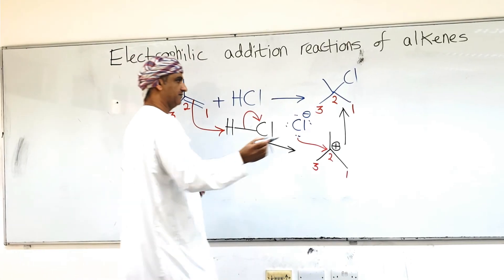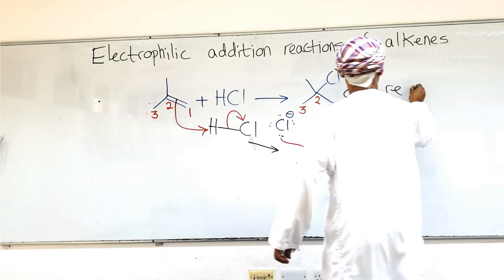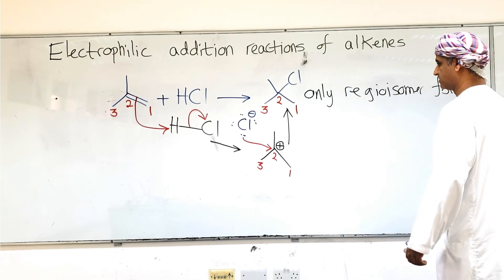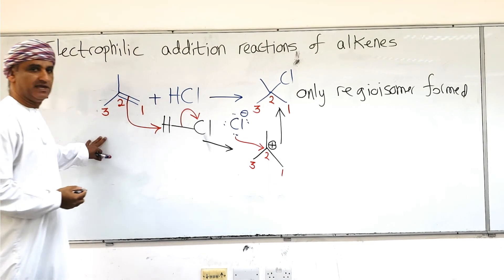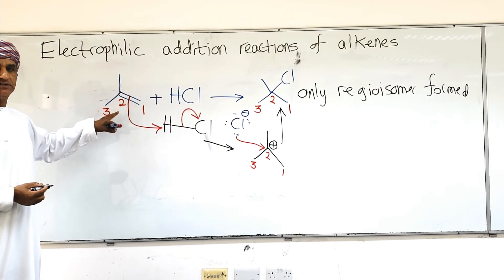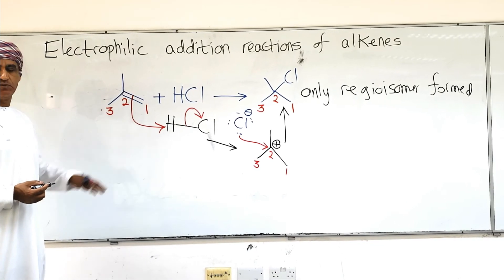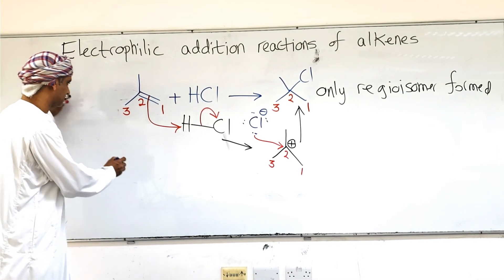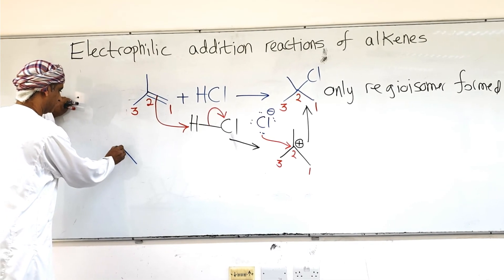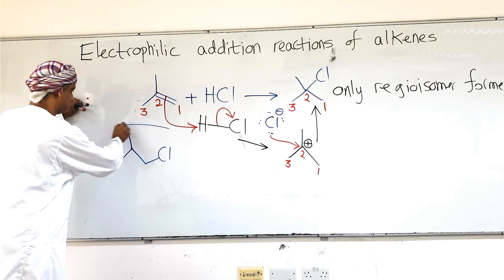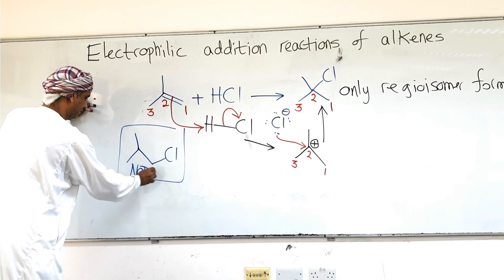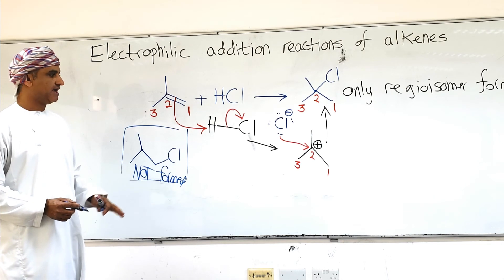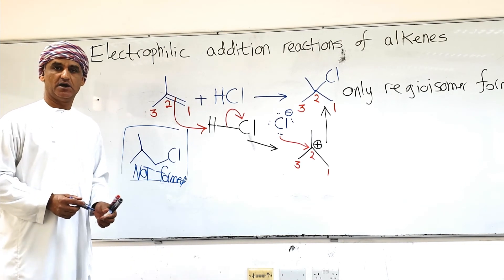The other regioisomer is not formed — that is, where H bonds to carbon two and Cl bonds to carbon one. This regioisomer is not produced, following Markovnikov's rule. The reason is the instability of the corresponding carbocation — the carbocation that would lead to the formation of this product is not stable.